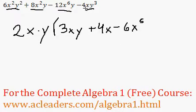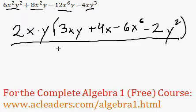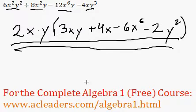And finally, negative 4 divided by 2 is just negative 2. x divided by x, those cancel out. And y cubed divided by y is y squared. That's it.